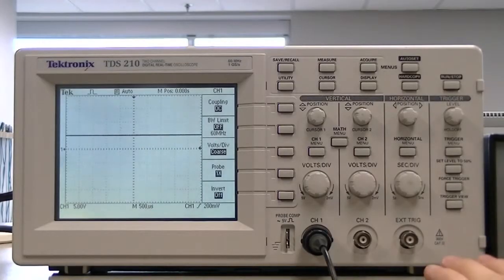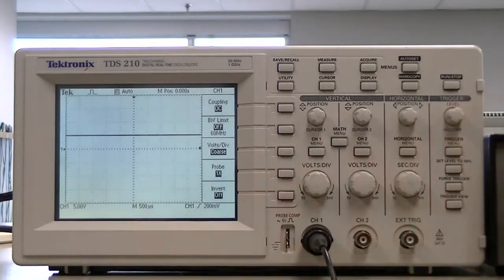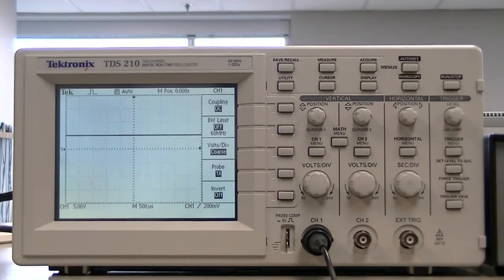Now back to the oscilloscope, we have DC offset of 5 volts, which is exactly what we got. And there is no sine wave because there is no AC current.